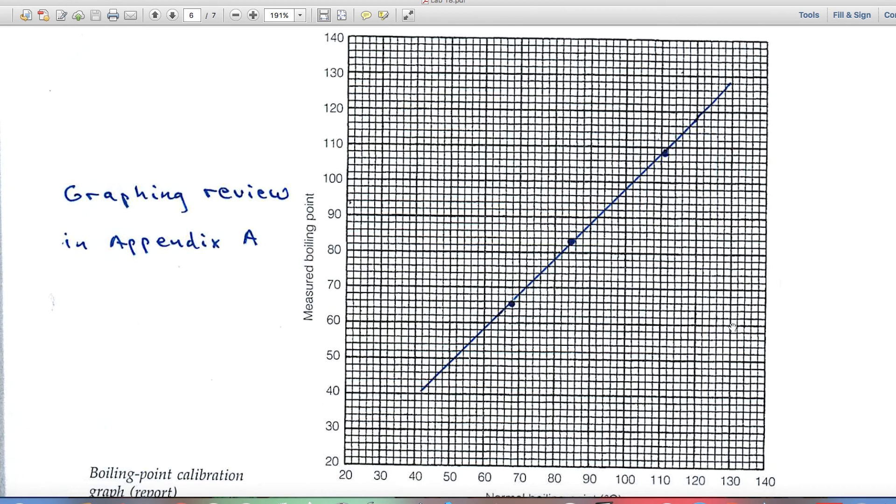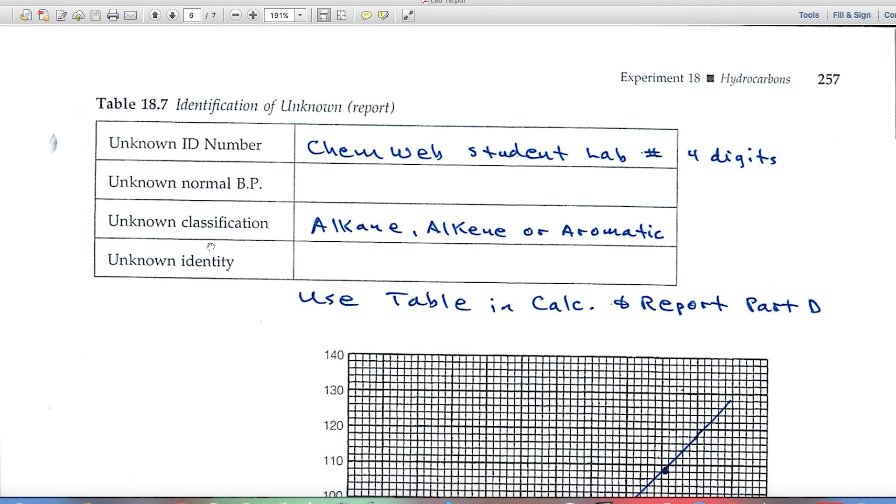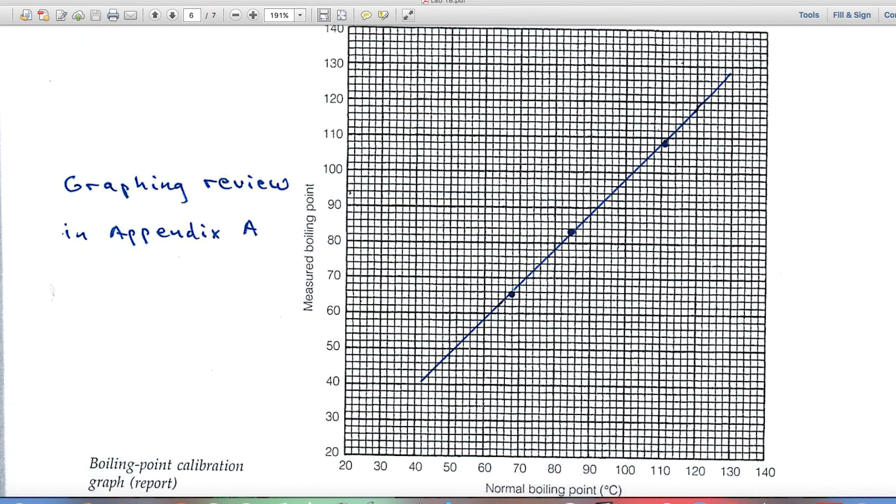And then when you have your unknown, and you want to get the unknown's normal boiling point, you'll use the graph. And here's how you would use it. You'll get the measured boiling point of your unknown. You'll come across whatever that value is, until you hit the line, and then come down, and that would give you the normal boiling point.